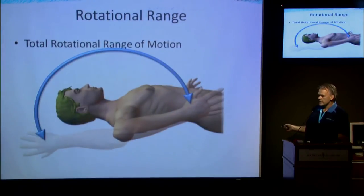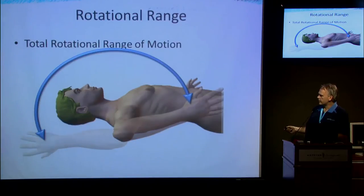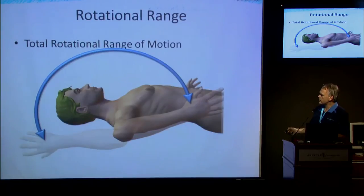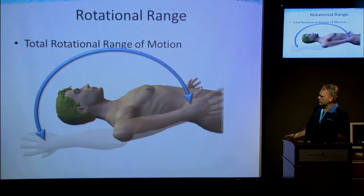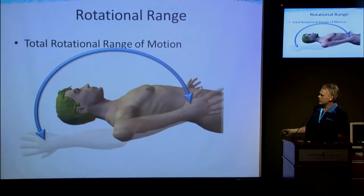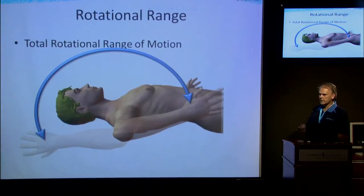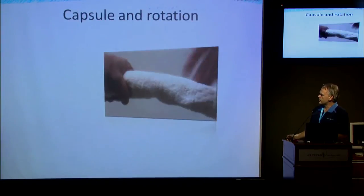Central to understanding all of this is getting a handle on the role the capsule plays and the changes in total rotational range of motion. It's now well understood that it's foolish to look at external rotation range or internal rotation range in isolation — you have to look at the sum of the two. For any given individual without pathology, this should be the same on both shoulders, although everyone will differ in what their total rotational range actually is.